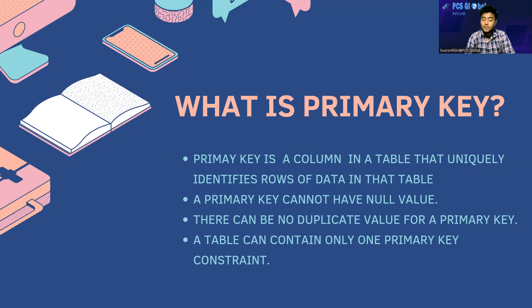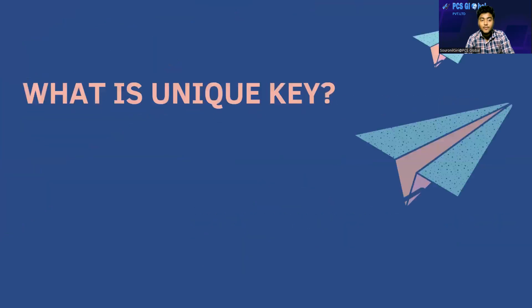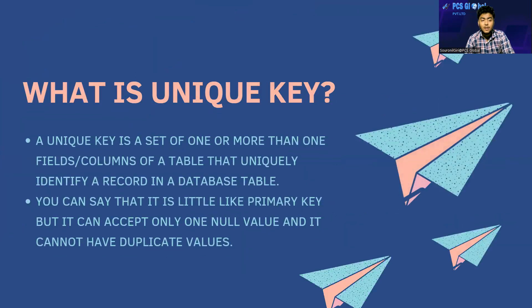The next question is: what is a unique key? A unique key is a set of one or more fields or columns of a table that uniquely identify a record in a database table. It is like a primary key, but it can accept only one null value and it cannot have duplicate values.